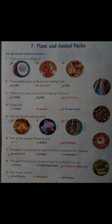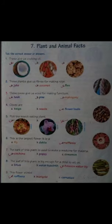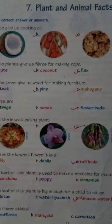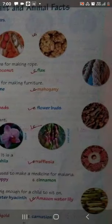आपको इन में options दिये हुए हैं और you have to take the correct option. जो correct answers हैं उन में आपको टिक करना है. See the first one: These give us cooking oil. In first वाले में तीन pictures दिये हुए हैं nuts के. The first one is coconut, second picture is peanut and third picture is walnut. Coconut oil, peanut oil और walnut oil - ये तीनों खाने में यूज होते हैं.